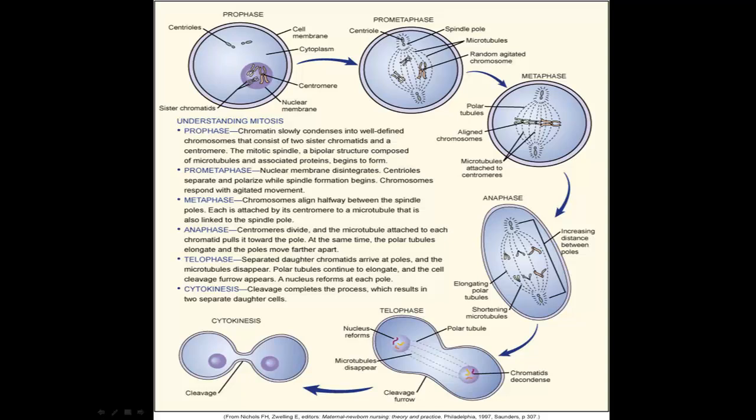A brief look at cells dividing: looking at this diagram, you can see the genetic material being pulled apart into two separate entities, so that there are two separate sets of genetic material available for the two new cells being formed. We'll get into more detail with that later.